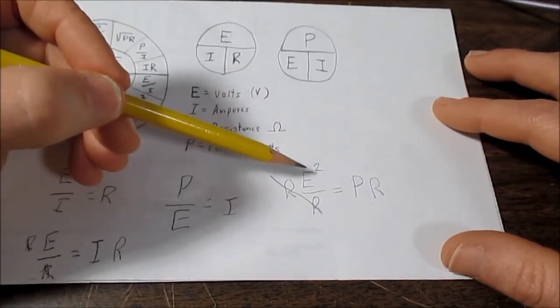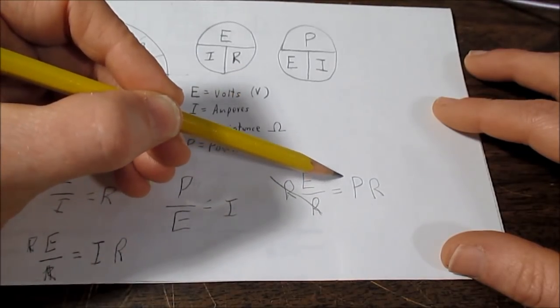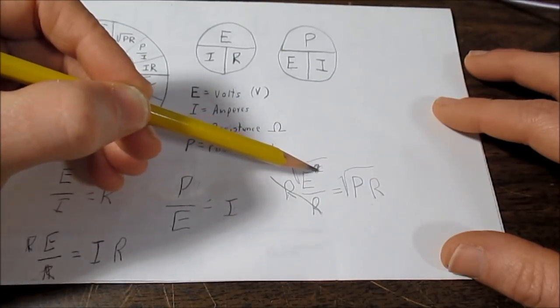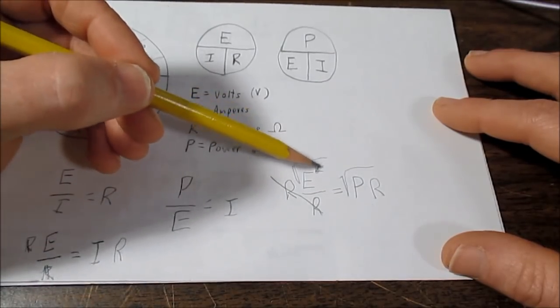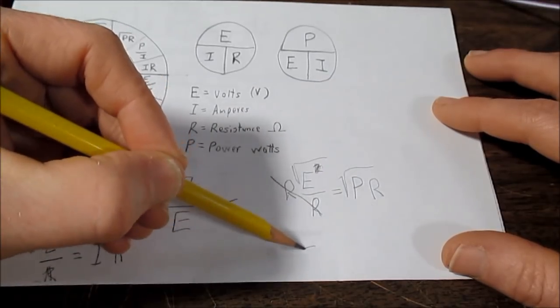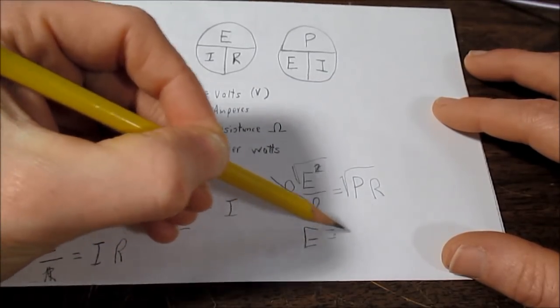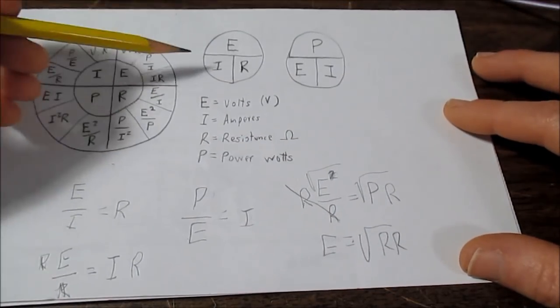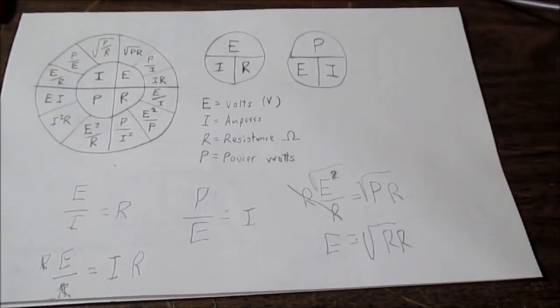And because E squared over here, we want to know what E is, not E squared. So we have to take the square root of both sides, and that cancels the squared here. So this just becomes E. Kind of messy. So, it ends up being that right there.